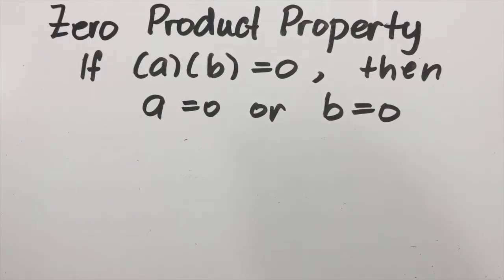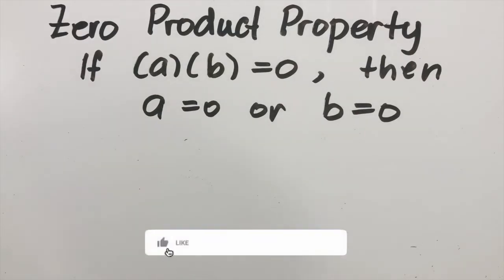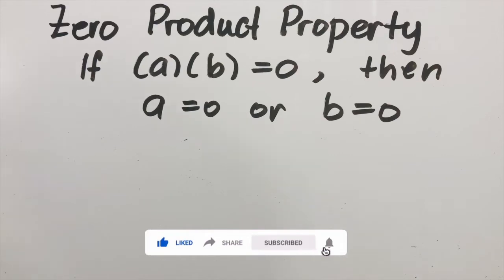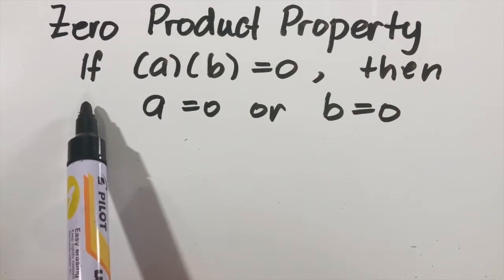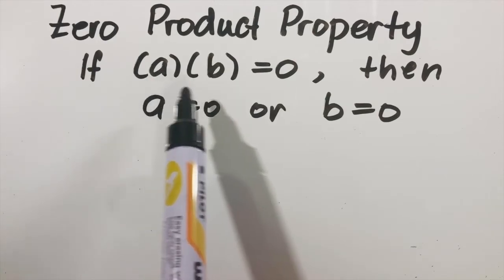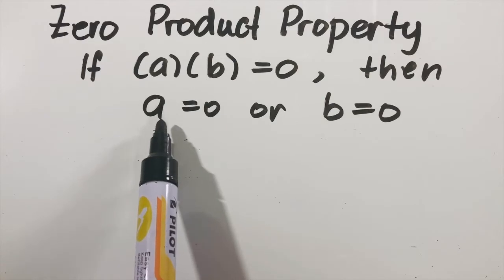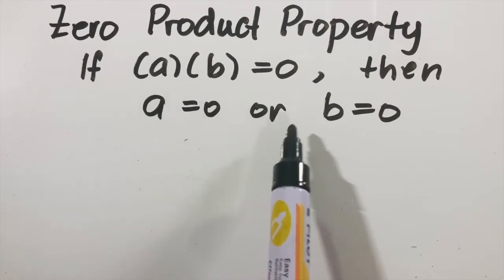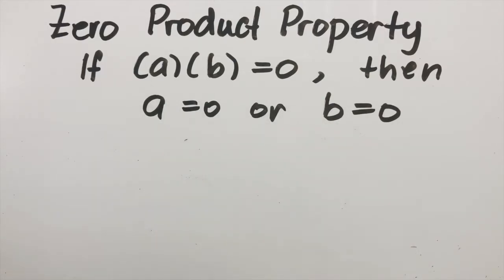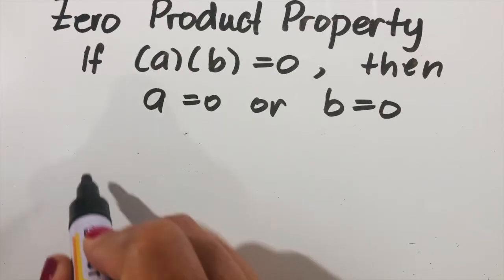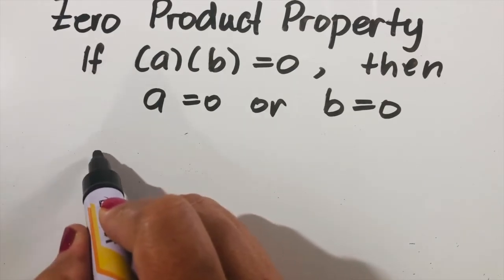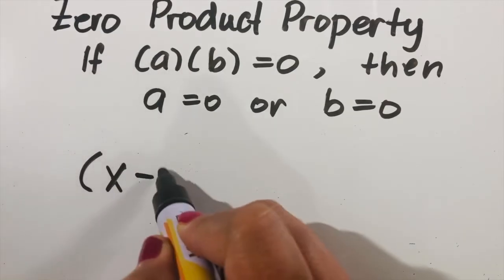This video shows how to solve quadratic equations using the zero product property — this is the easiest method. So what is the zero product property? It states that if the product of two quantities a and b is equal to zero, then set a equals zero or b equals zero.